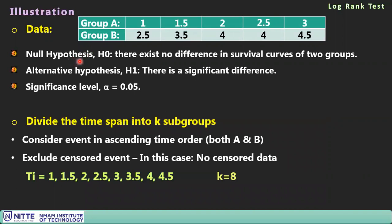Step 1: H₀ — no difference in survival curves; H₁ — significant difference exists. Set α = 0.05. Step 2: Pool event times from groups A and B in ascending order, excluding censored times. The pooled event times are 1, 1.5, 2, 2.5, 3, 3.4, 4.5, giving k = 8 time intervals.